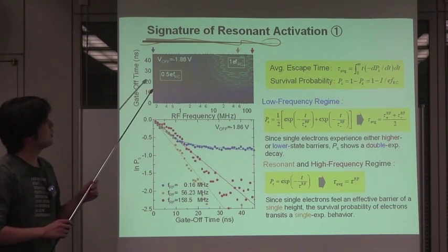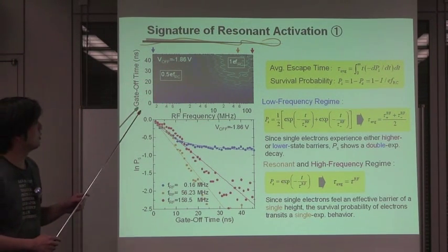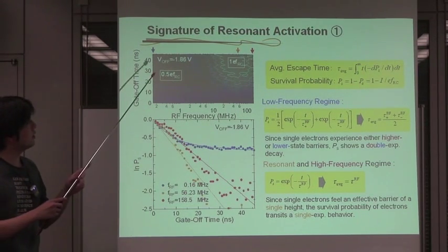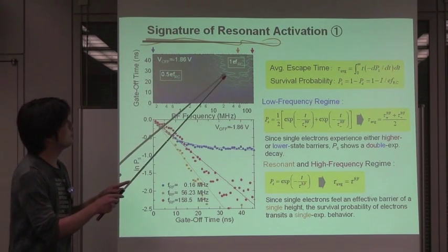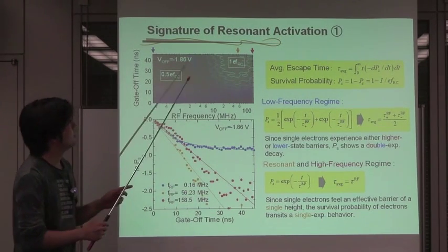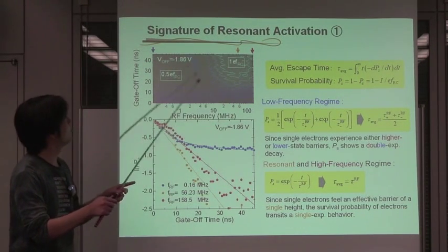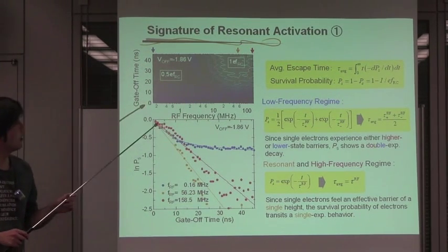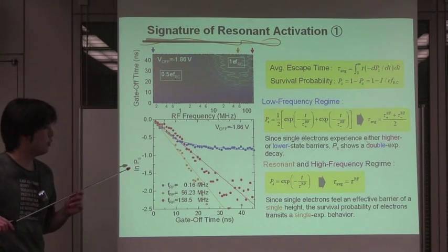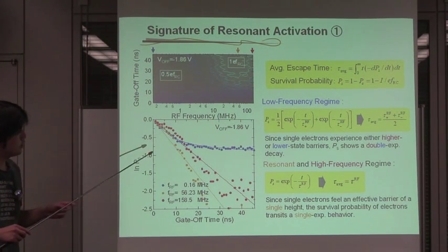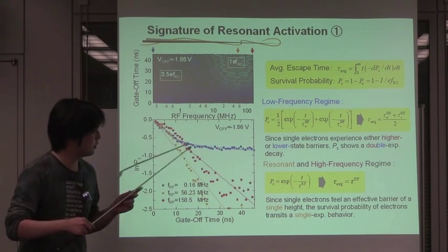This figure shows the time-domain data of the escaping electron as a function of RF frequency. As you can see, the current suppression can be observed in the lower frequency regime, while the current enhancement resonantly appeared at around several tens of megahertz. The experimental data, as indicated by blue, orange, red arrows, are again plotted in the lower figure in the form of the survival probability. As you can see, the experimental data can be fitted with the double exponential decay.